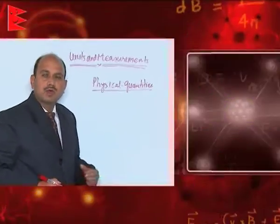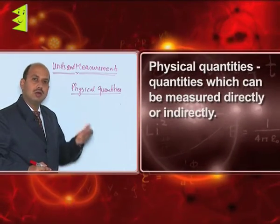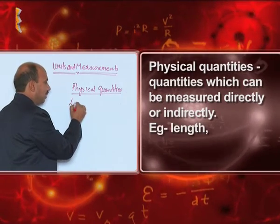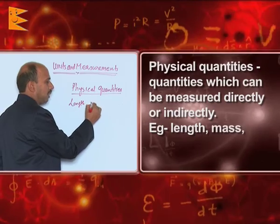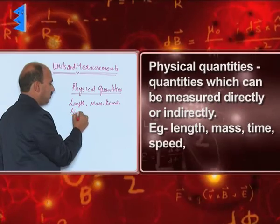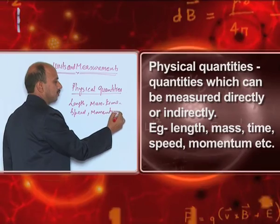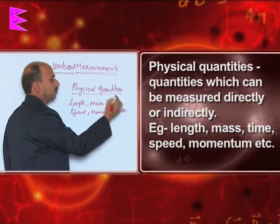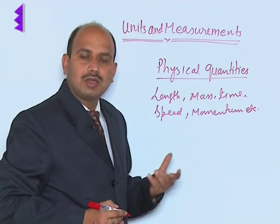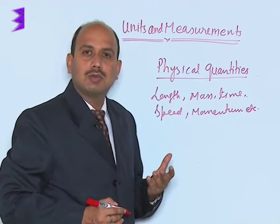All those quantities which can be measured directly or indirectly are known as physical quantities. For example, length, mass, time, speed, momentum, etcetera. There are so many quantities which can be measured — all those quantities are known as physical quantities, and these quantities are also used to describe laws of nature.